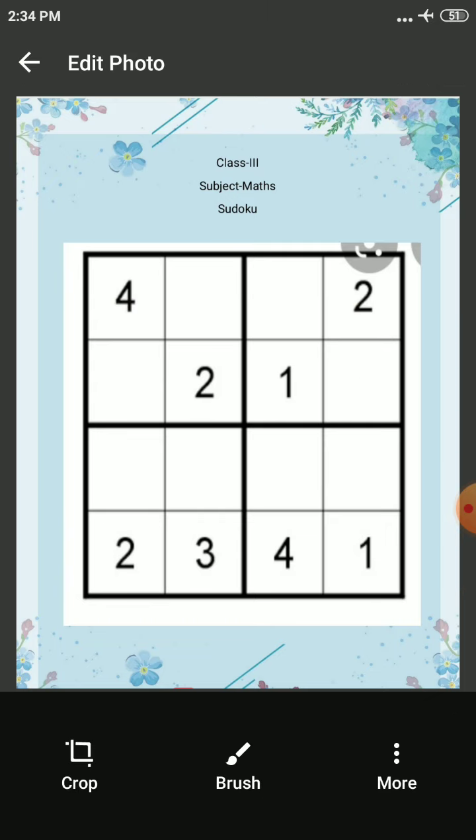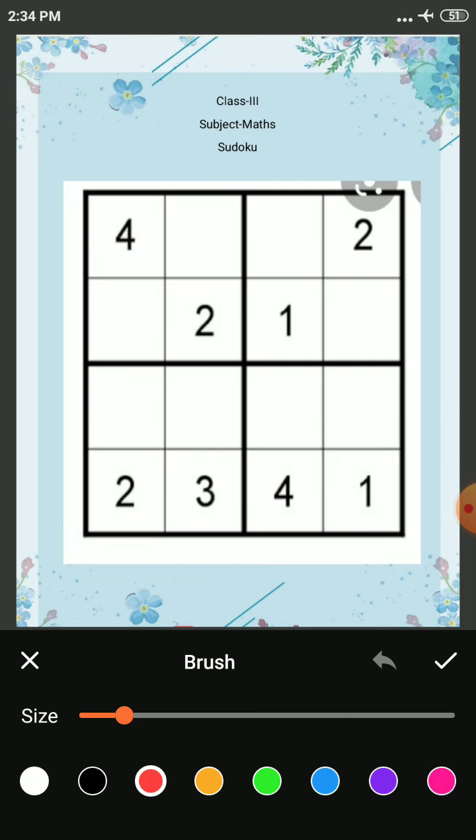So let's start. First of all, take this row. 4 is here and 2 is here. 1 and 3 are missing, but we cannot write 1 here because 1 is already in this column. So we will write 1 in this cell and 3 in this cell.